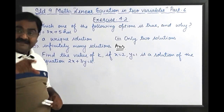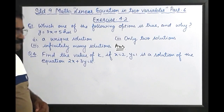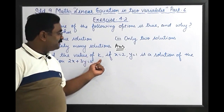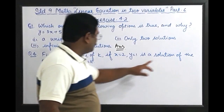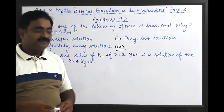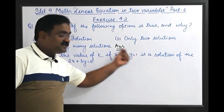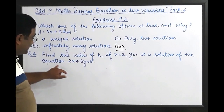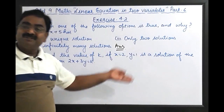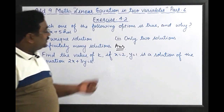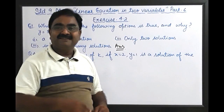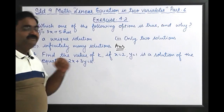Let us now see question number four of this exercise. Question four: find the value of k if x equals 2 and y equals 1 is a solution of the equation 2x plus 3y equals k. Given that x equals 2 and y equals 1 is a solution of this equation. If it is a solution, then these values satisfy the equation, and we can easily find the value of k.